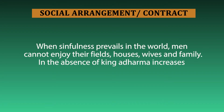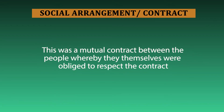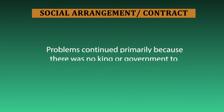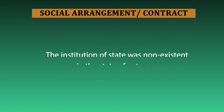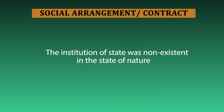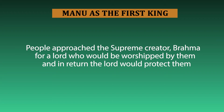They understood that when there is chaos and anarchy, men cannot enjoy the fields, grains, houses, wives and family. In the absence of a king and state, adharma increases. There was a mutual contract between the people whereby they themselves were obliged to respect the contract. However, problems continued because this was a mutual contract with no king and no government to enforce it. The people could not create an ideal state or king on their own. Therefore, people approached the supreme creator Brahma for a lord who would be worshipped and who would take care of their needs.